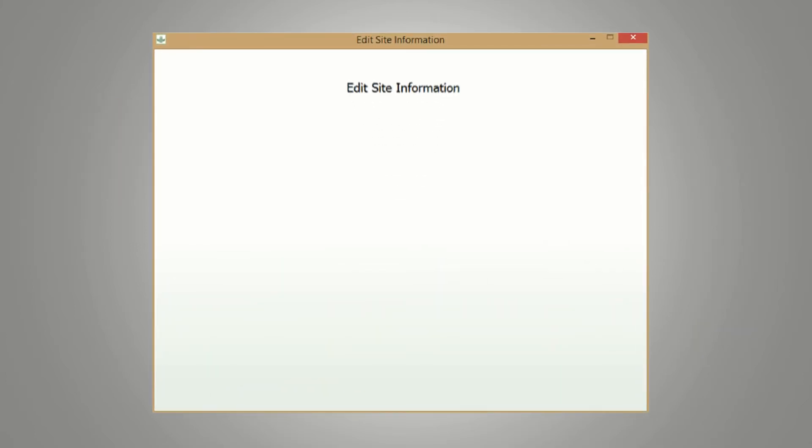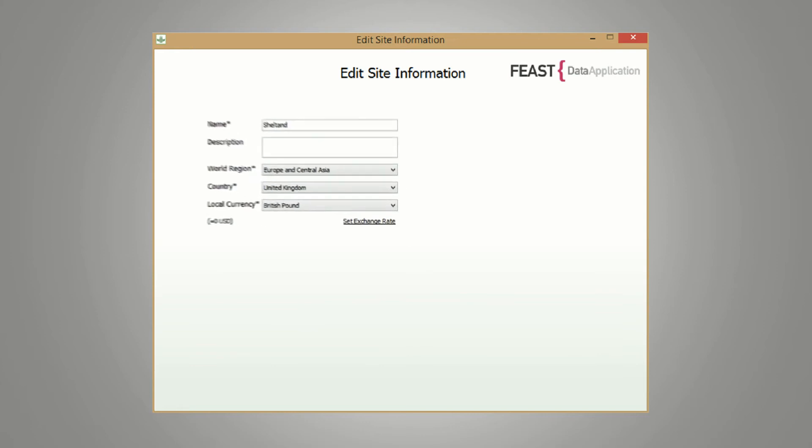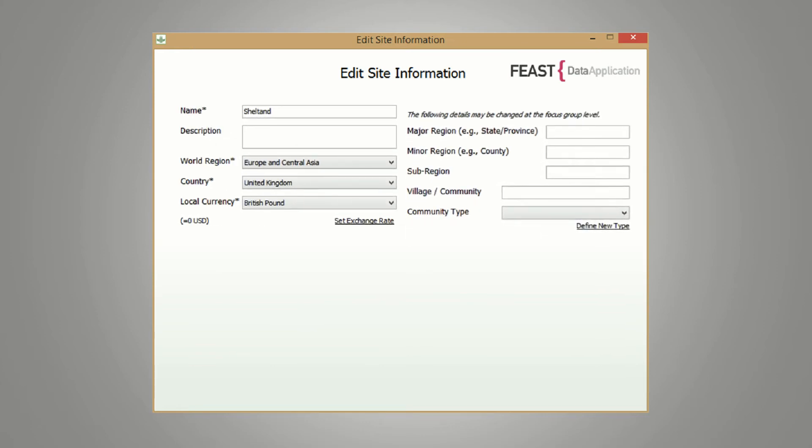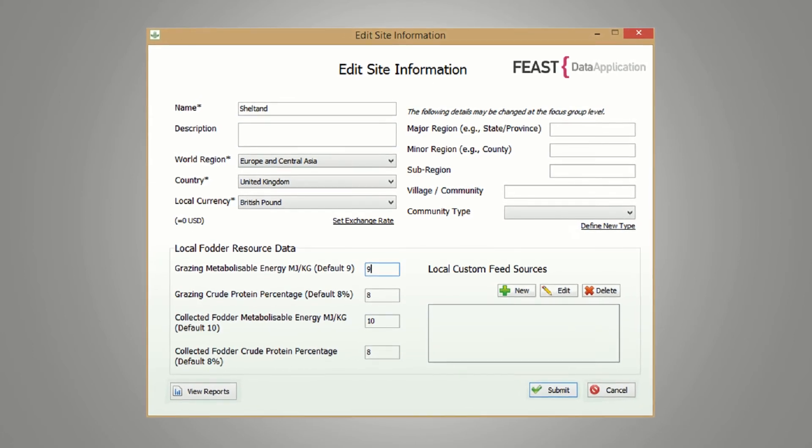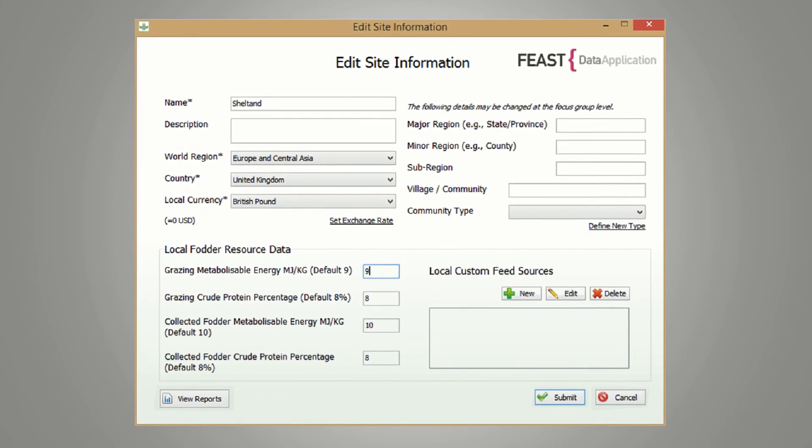FEAST guides the researcher through a series of questions. These questions cover focus groups, information on their farms and households, the rainfall, the availability of feed and water throughout the year, agro-economic growth and the cost of labor.